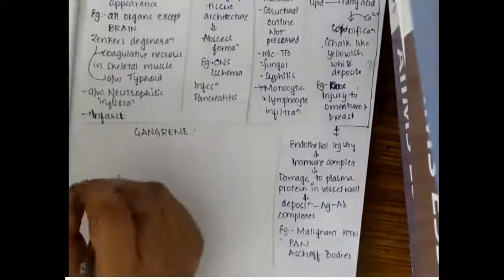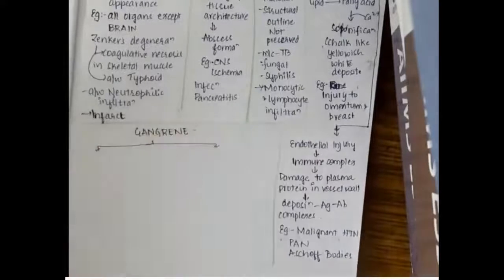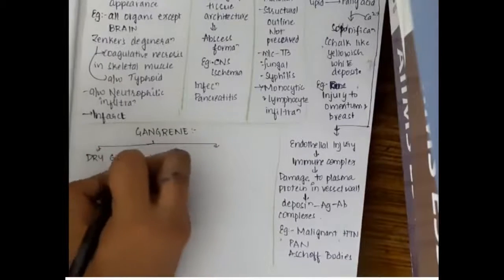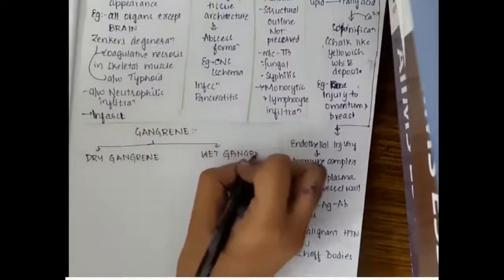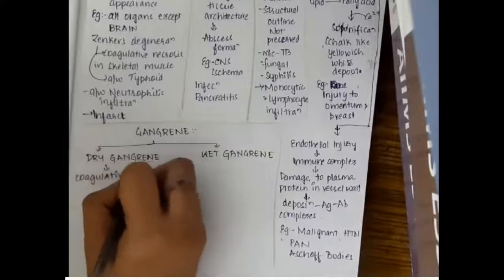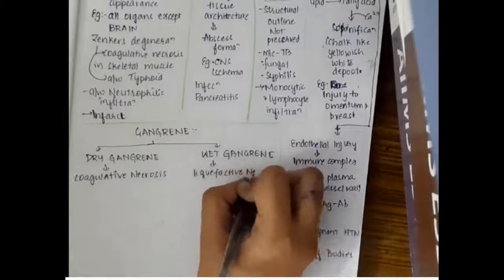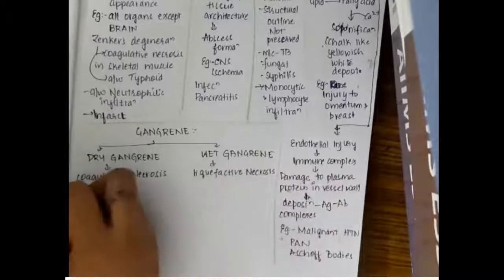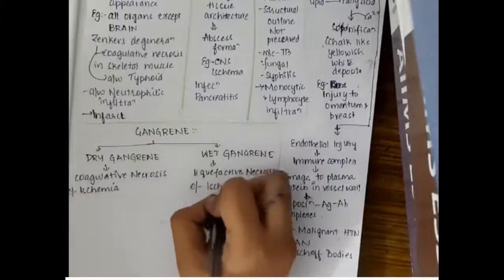The last type is gangrene. Gangrene is a type of necrosis but this is mainly a clinical term used in surgery. Gangrene can be either dry or wet gangrene. Dry gangrene is a type of coagulative necrosis occurring due to ischemia.